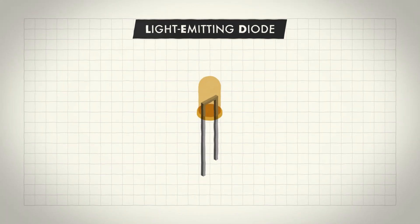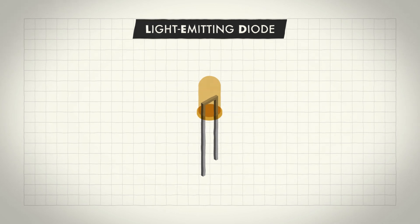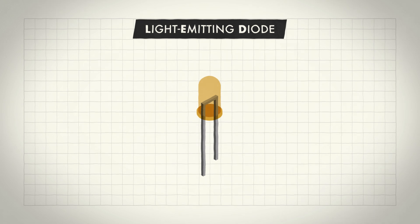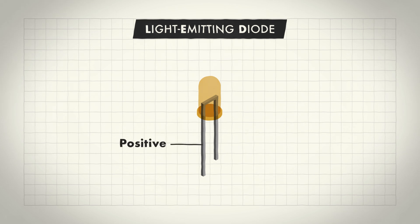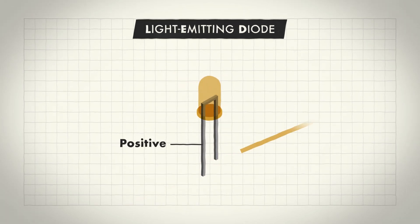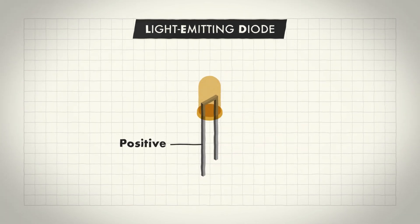LEDs only work in a circuit one way, so pay attention to this bit. When connecting an LED to your circuit, you have to remember that the electricity flows from the positive terminal — your numbered pin — into the long leg of the LED, through the diode and back out through the short leg.